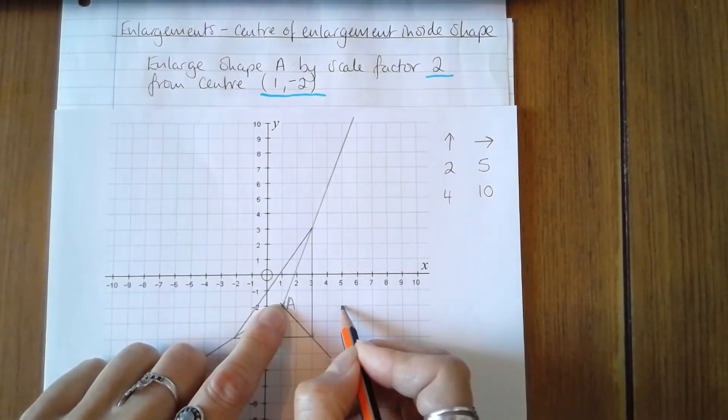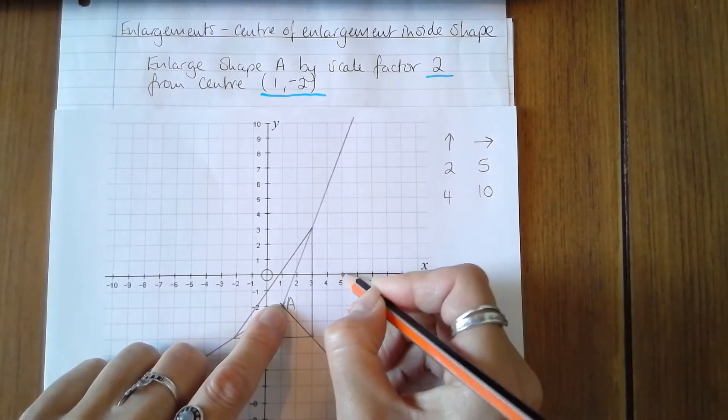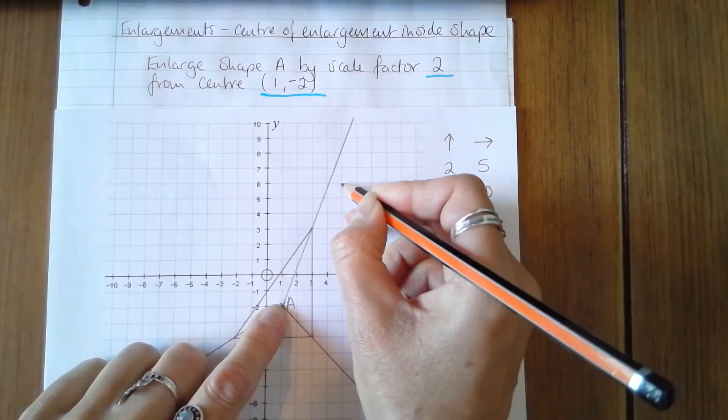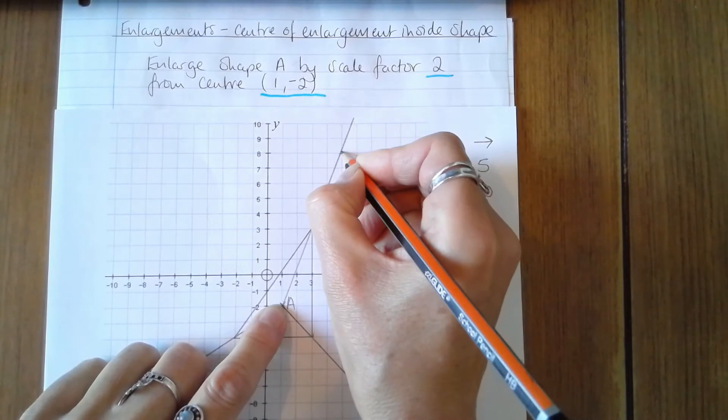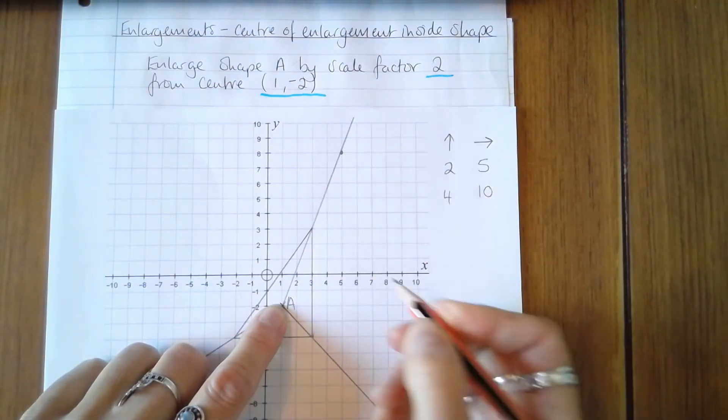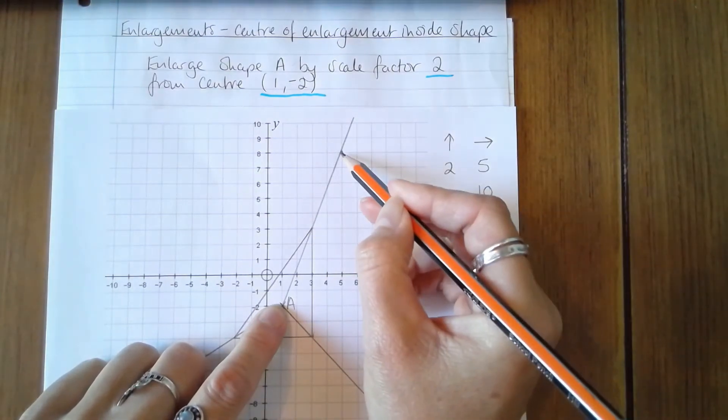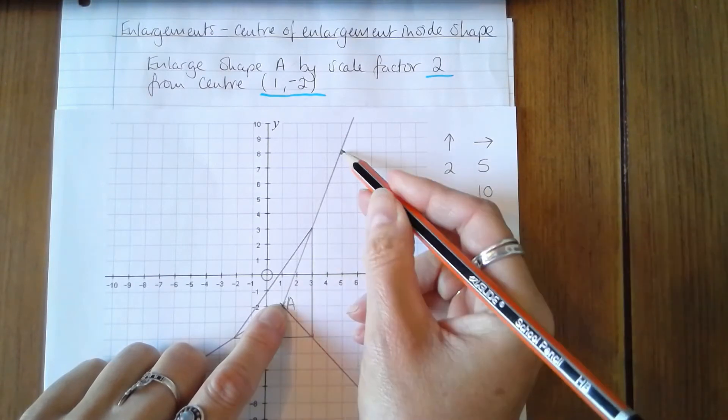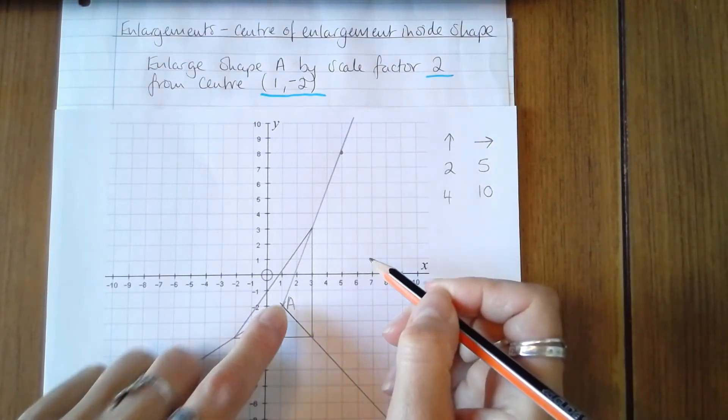So now I count 4 to the right and 2, 4, 6, 8, 10 up, and my point lies on my guideline. So now I can be fairly confident, because it's on the guideline, that that point is in the correct place and I haven't miscounted.